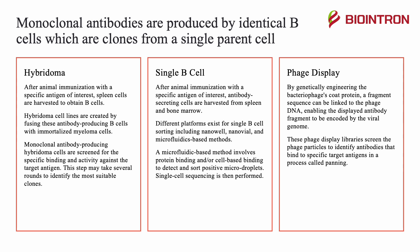The second method is single B-cell technologies. After animal immunization with a specific antigen of interest, antibody-secreting cells are harvested from spleen and bone marrow. Different platforms exist for single B-cell sorting including nano-well, nano-vial, and microfluidics-based methods. A microfluidic-based method involves protein binding and/or cell-based binding to detect and sort positive microdroplets. Single-cell sequencing is then performed.